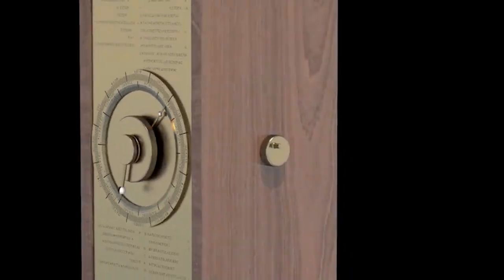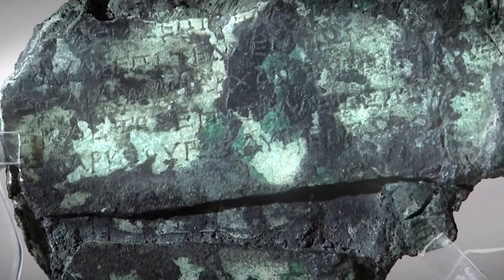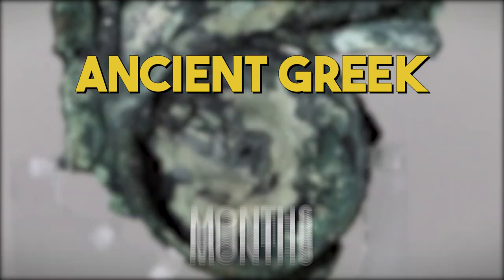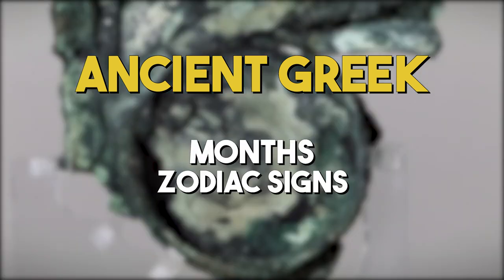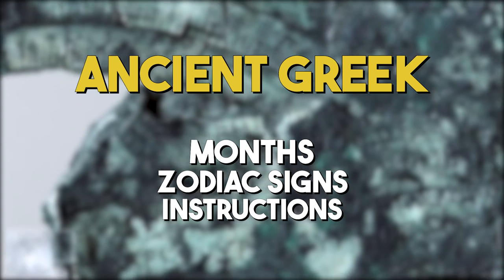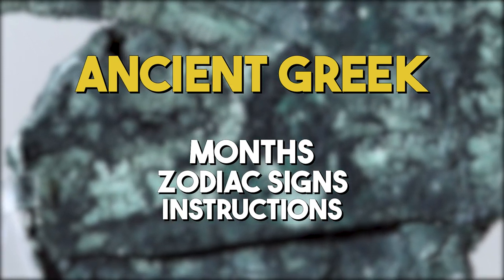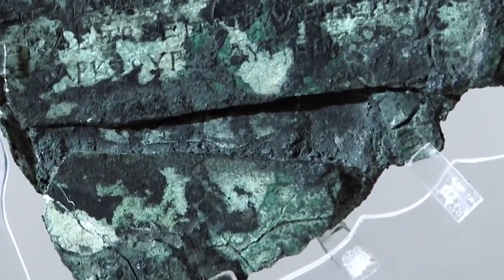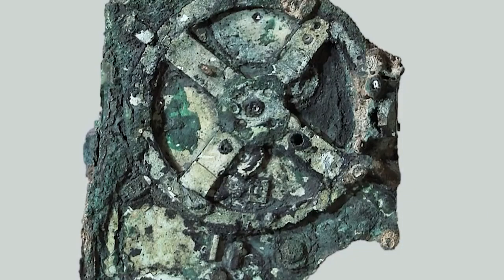Inscriptions found on the mechanism provide further evidence of its purpose. These inscriptions, written in ancient Greek, include names of months, zodiac signs, and instructions on how to use the device. This invaluable information has helped researchers understand the incredible sophistication and accuracy of this ancient calculator.